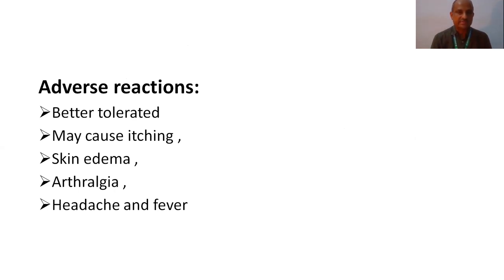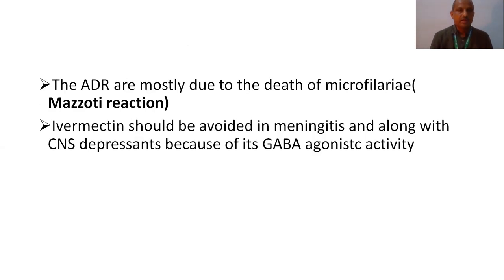Coming to the adverse reactions: this Ivermectin is well tolerated. It may cause mild symptoms like itching, skin edema, painful joint pains, arthralgia, headache, and fever. Another adverse reaction, mostly due to the death of the microfilaria, is a condition called the Mazzotti reaction, which involves the eyes, causing ocular inflammation. Sometimes it rarely leads to blindness. Ivermectin should be avoided in meningitis and should not be used along with CNS depressants because of its GABA agonistic activity. Along with CNS depressants, if used in meningitis, the patient suffers severe CNS depression.